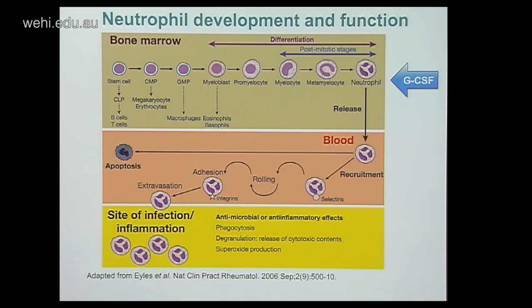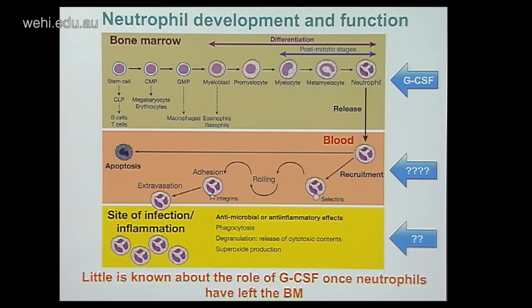GCSF is known to play an important role in neutrophil development in the bone marrow. However, less is known about GCSF at the site of inflammation. There is some anecdotal evidence that it is increased at sites of inflammation, such as the synovial fluid in rheumatoid arthritis. Even less is known about the role of GCSF once cells have left the bone marrow and entered the blood and its role in movement into sites of infection or inflammation.